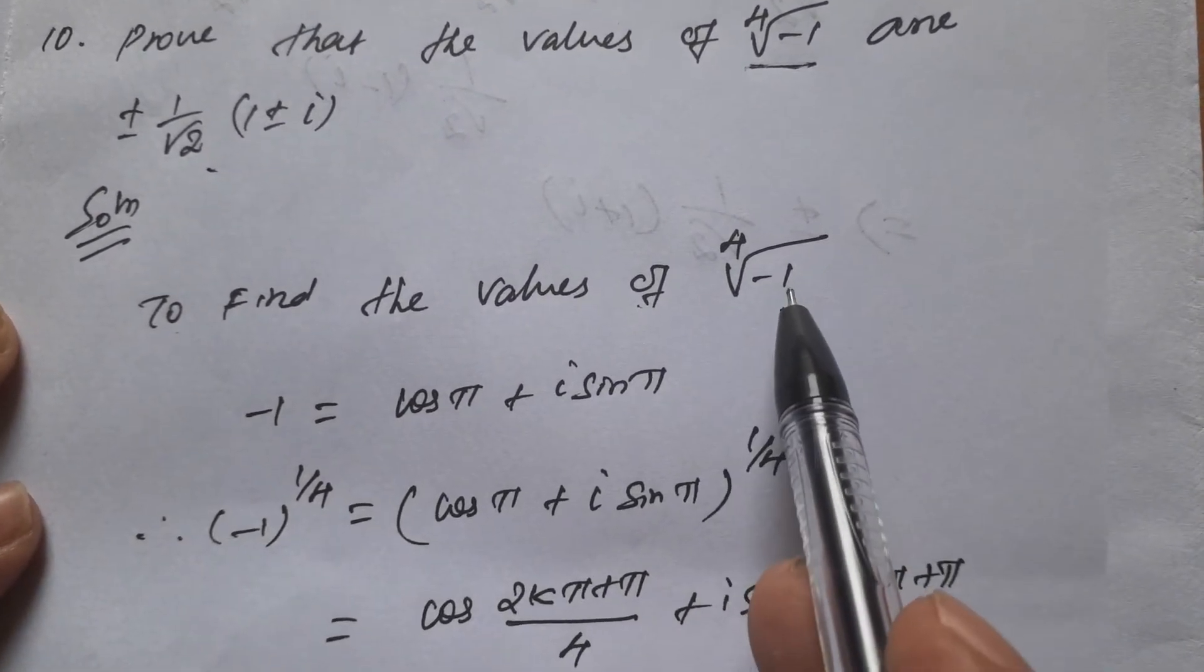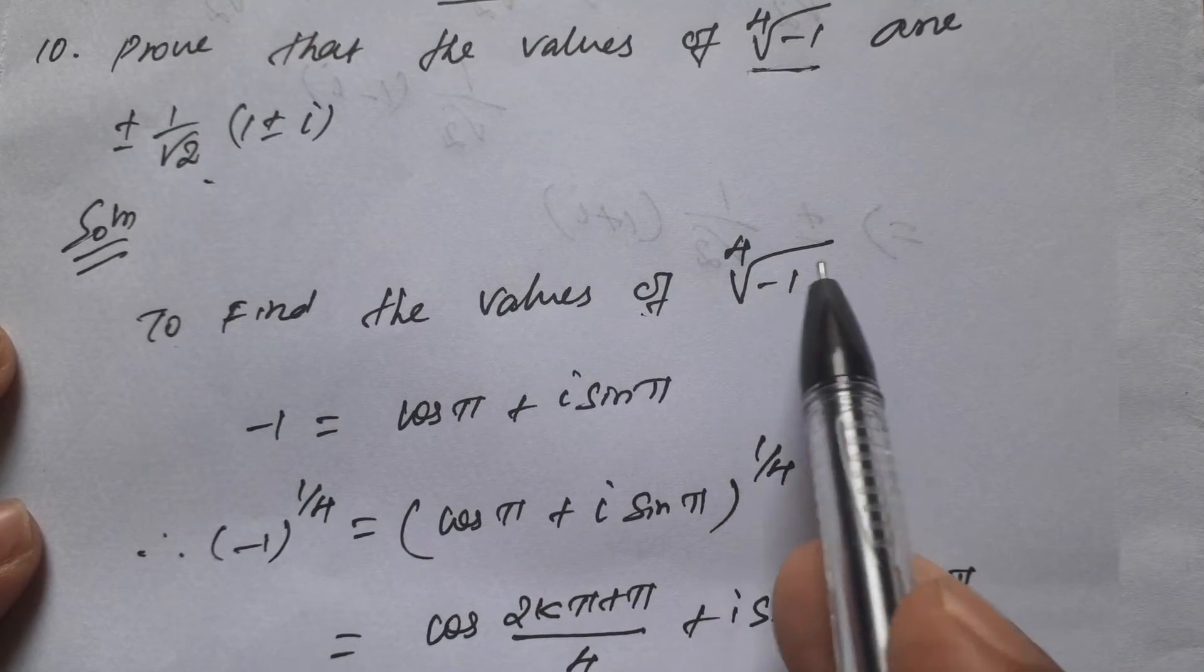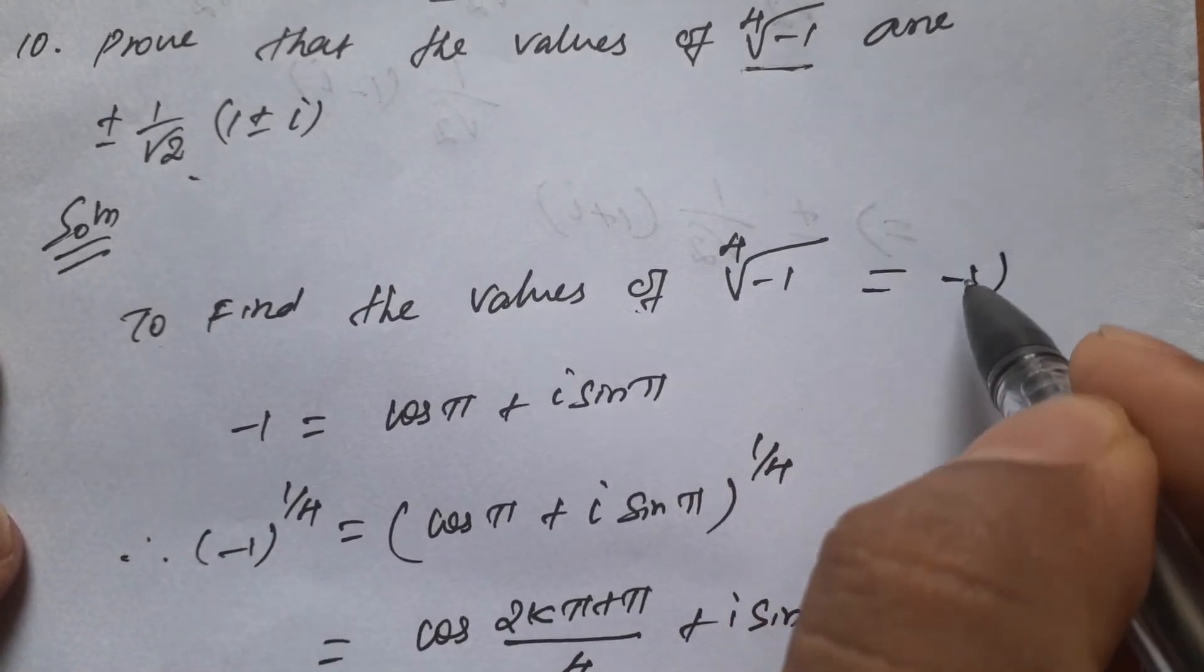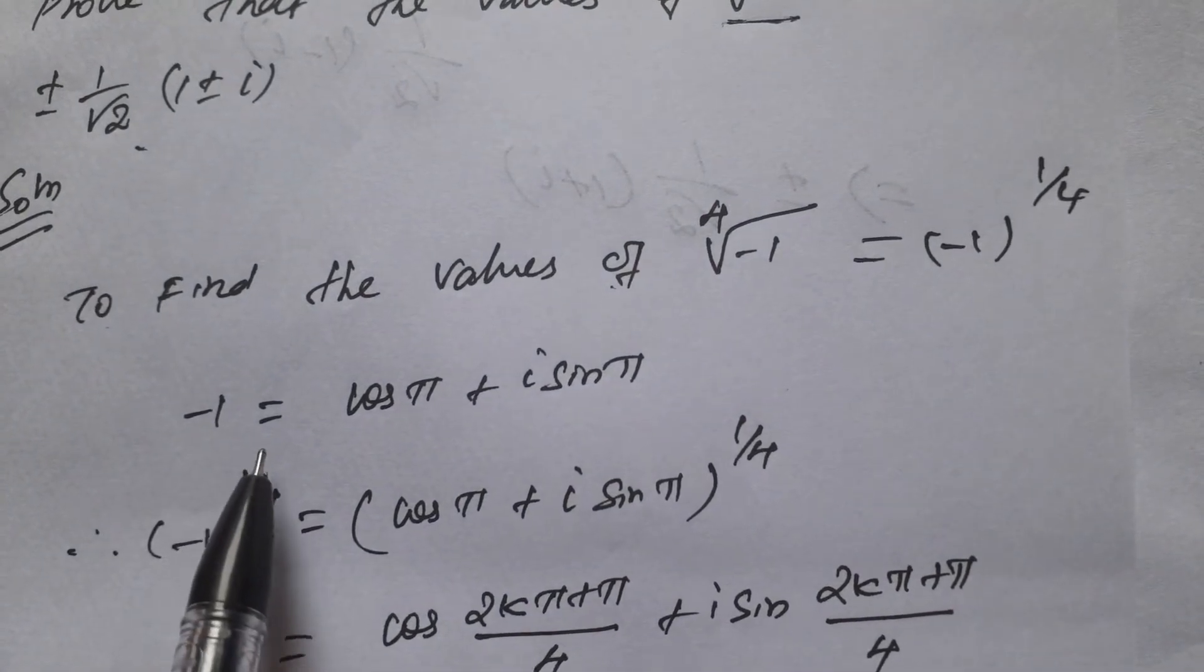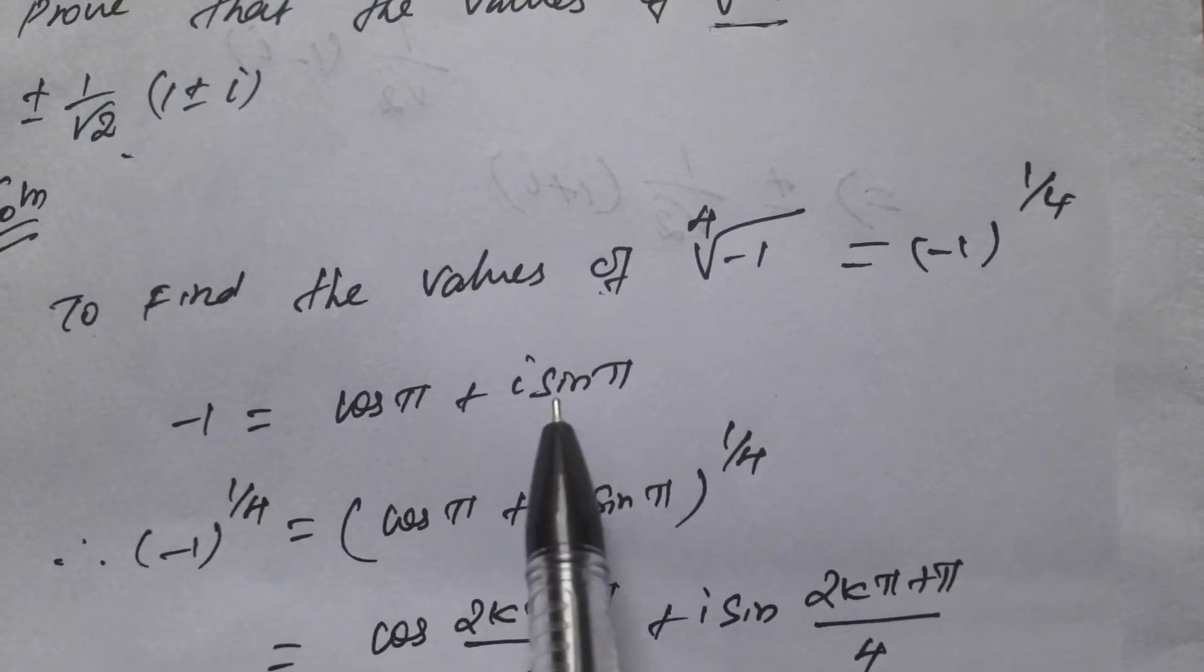If we find the value of fourth root of minus 1, this is minus 1 power 1 by 4. Minus 1 is equal to cos π plus i sin π.